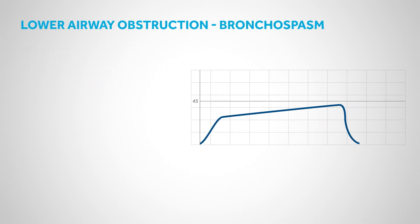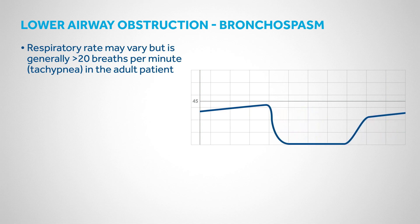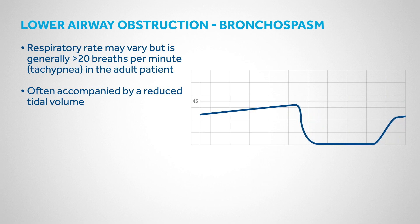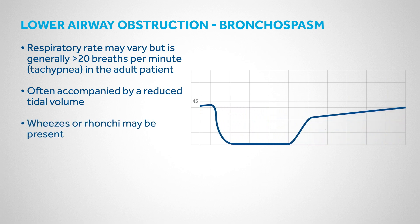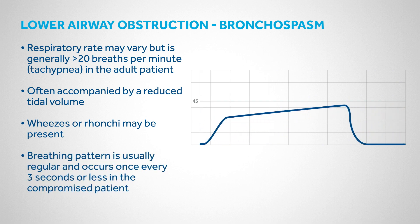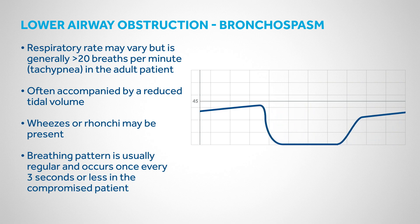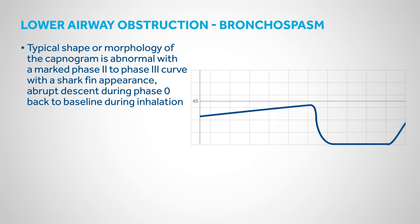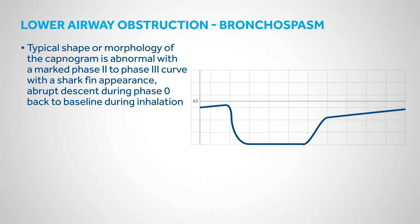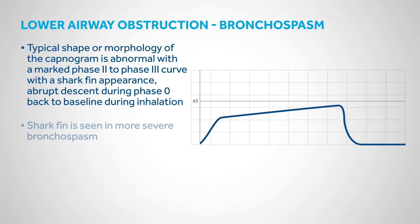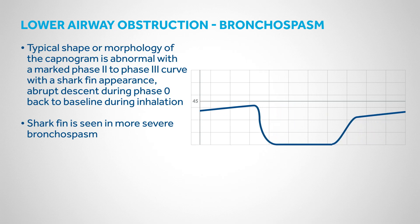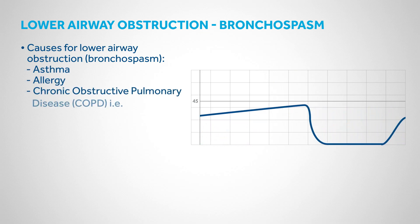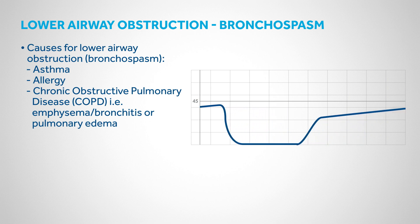In cases of lower airway obstruction from bronchospasm, respiratory rate is generally greater than 20 breaths per minute, often accompanied by reduced tidal volume, with wheezes or ronchi possibly present. The breathing pattern is usually regular, occurring once every 3 seconds or less in the compromised patient. The typical capnogram morphology is abnormal with a marked Phase 2 to Phase 3 curve with a shark fin appearance and abrupt descent during Phase 0. The shark fin is seen in more severe bronchospasm. Possible causes include asthma, allergy, COPD, emphysema, bronchitis, or pulmonary edema.